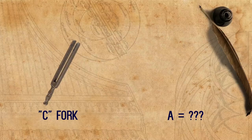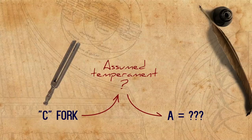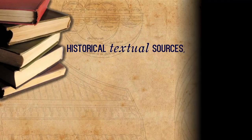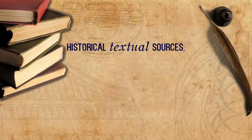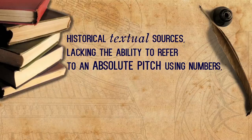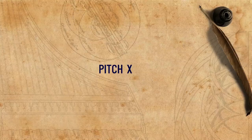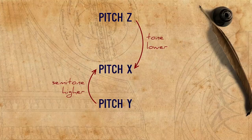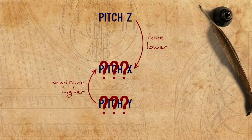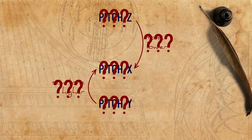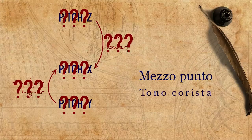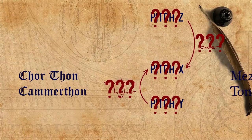Third, we want everything to be compared with A, so whenever we have a note other than A as evidence — as is often the case with old tuning forks — we have to convert it to A according to an assumed temperament, which increases the number of underlying assumptions. Fourth, historical textual sources, lacking the ability to refer to an absolute pitch using numbers, build up an intricate web of relativity: pitch X is higher than pitch Y by a semitone, but lower than pitch Z by a tone, and so on. Fifth, these pitches are often assigned names such as Mezzo Punto and Tono Corrista in Italy, or Coton and Camoton in Germany, and different writers used these terms confusingly differently.